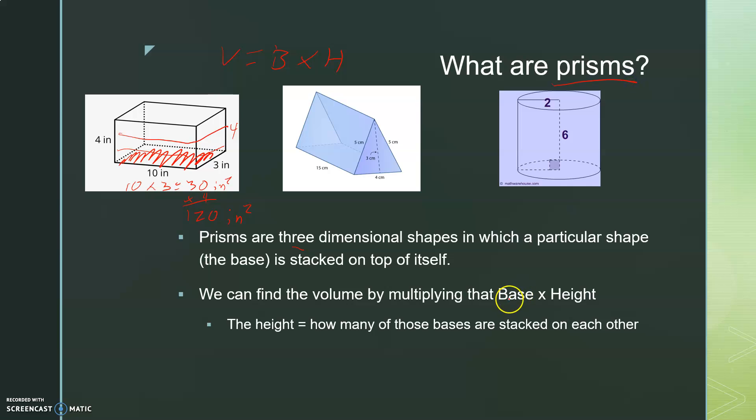Now this only applies to prisms. Base times height. So the base depends on what the shape it is. In this shape, this was a rectangular base. In the one we're going to talk about today, triangular prisms, it is a triangle base that's stacked on top of itself a bunch of times. Hopefully we'll talk about this one later, but the circular prism is just circles stacked on top of itself. Kind of like a canned good, like a can of cranberry, that's a tongue twister. And then the height is however many of those bases are stacked. In this case, there's 15 stacked on top of itself. In this case, there's 6 stacked on top of itself.